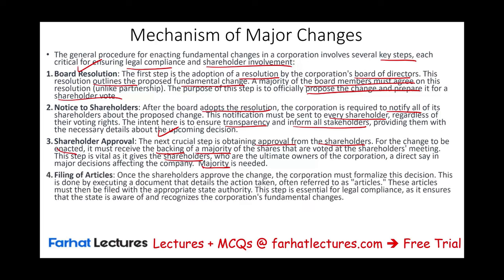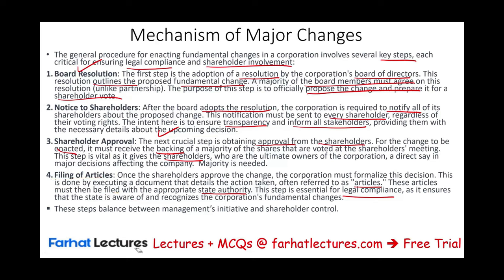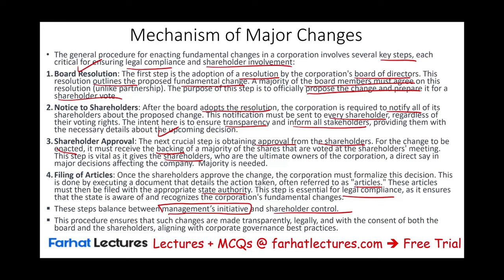Once the shareholders approve the decision, it gets filed. The corporation must formalize this decision by executing a document — often referred to as articles — detailing the action taken. These articles must then be filed with the appropriate state authority for legal compliance. For example, if we're changing the articles of incorporation, we submit that paperwork to the state. These steps balance management initiative and shareholder control, ensuring changes are transparent, legal, and aligned with corporate governance best practices.